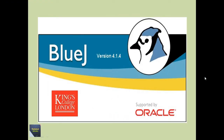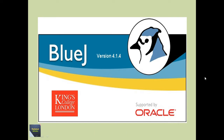Hello friends, welcome to my channel TechnicalArquan, myself Arnup Kundu. Today I will discuss loop statements in Java using BlueJ IDE. Normally in Java, there are three types of loops. One is for loop, another is while loop, and another is do-while loop. I will discuss one after another elaborately. Here I am using BlueJ IDE version 4.1.4. So, let's start.